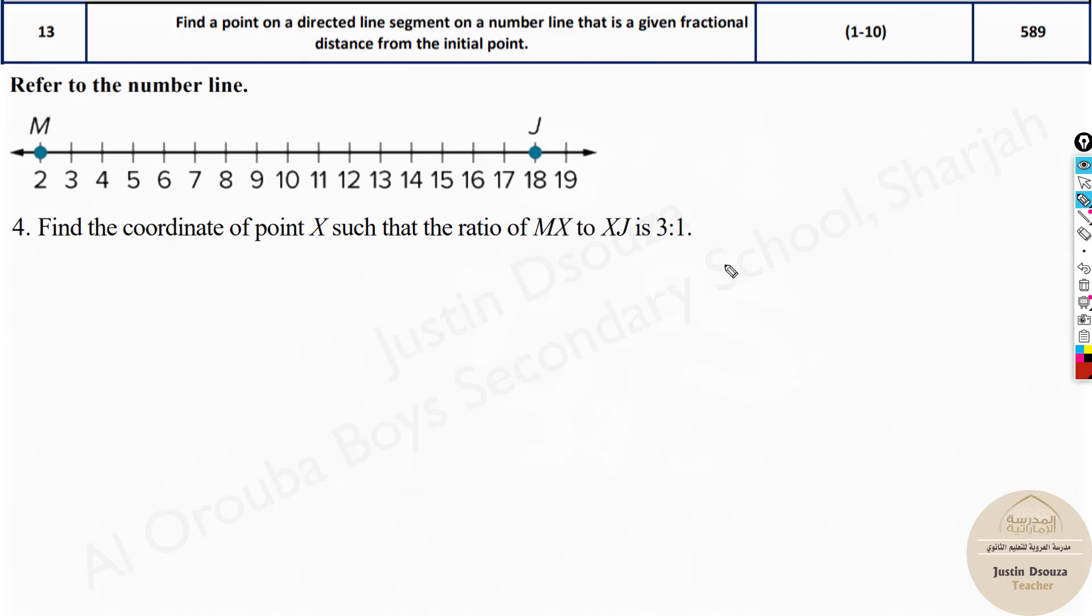In this problem, if you see, we have got the ratio m is to n, not the fractional distance. Whenever you get like this 1 by 4 or 3 by 9, it's the fractional distance. Now we have been given ratios and they have to find the coordinate point X such that the ratio of MX to XJ is 3 to 1. So this one part is 3 times this. How would we do that?